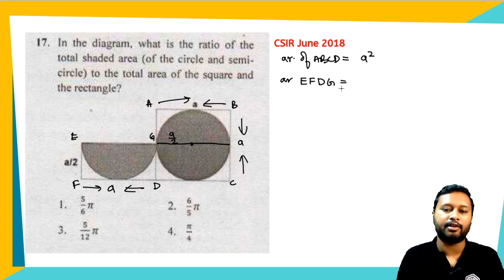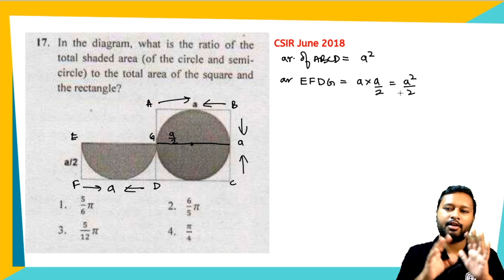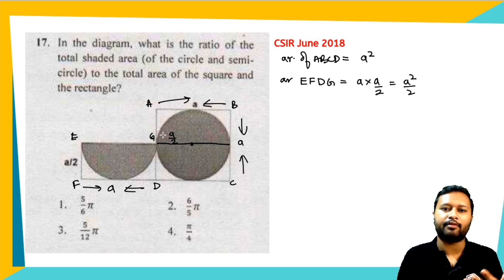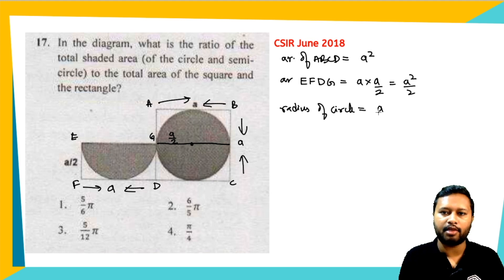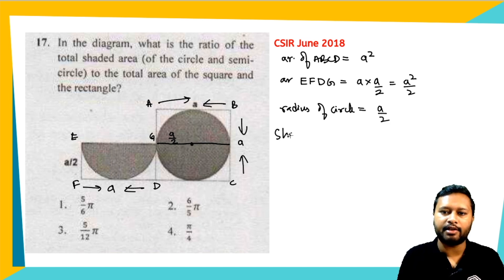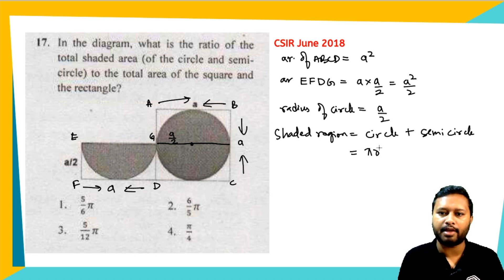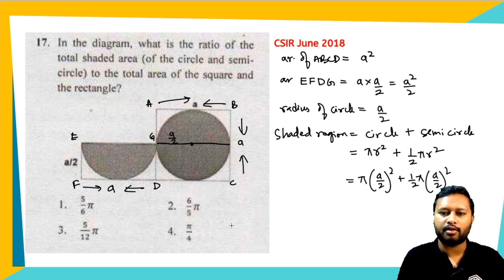Let's name the square ABCD and the rectangle EFDG. Area of ABCD = a². Area of rectangle EFDG = length × width = a × (a/2) = a²/2. Total area = a² + a²/2 = 3a²/2. The shaded region consists of a complete circle and a semicircle, both with radius a/2.